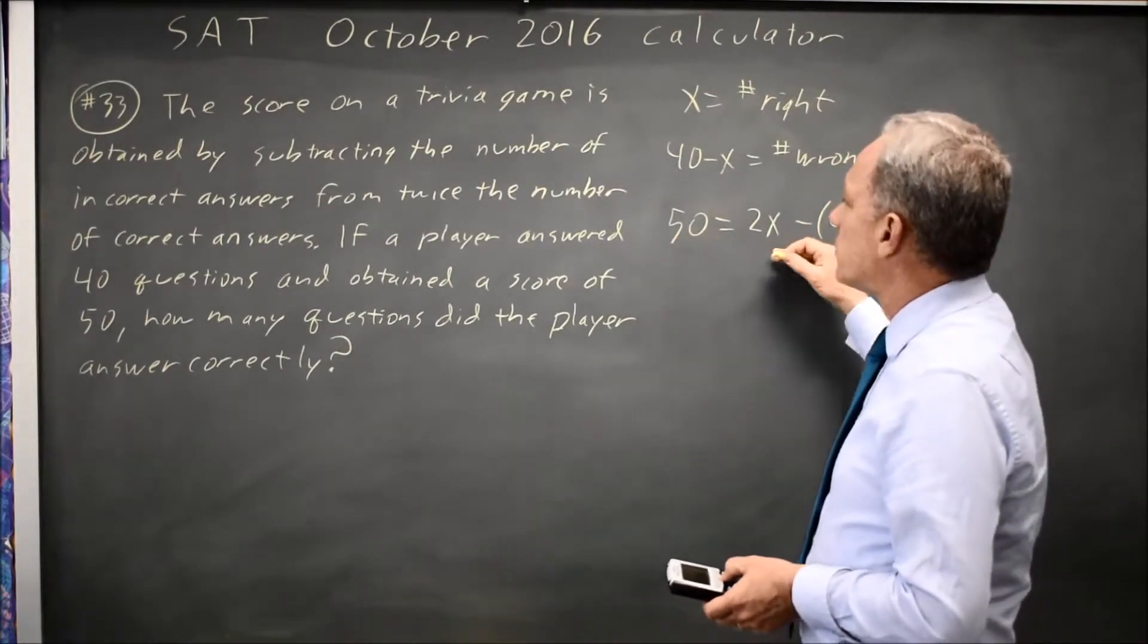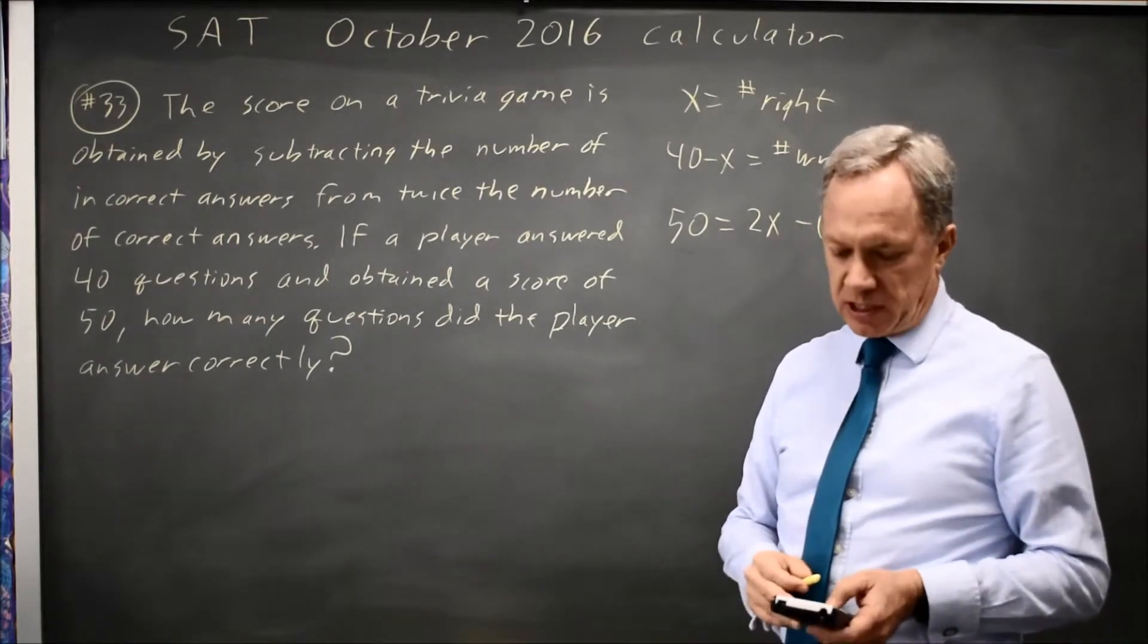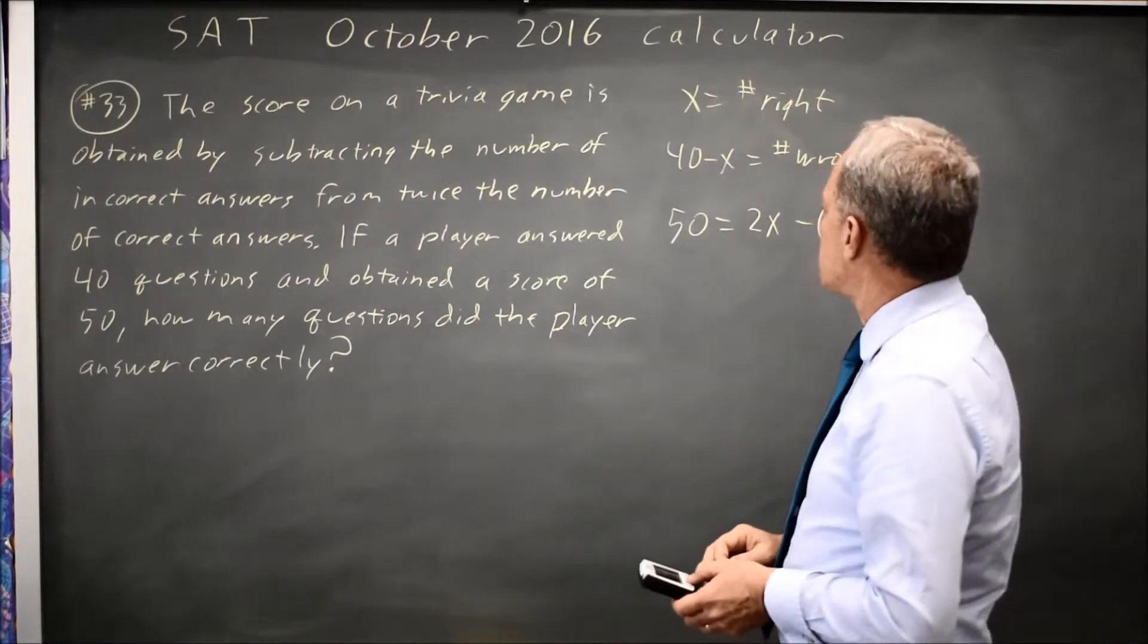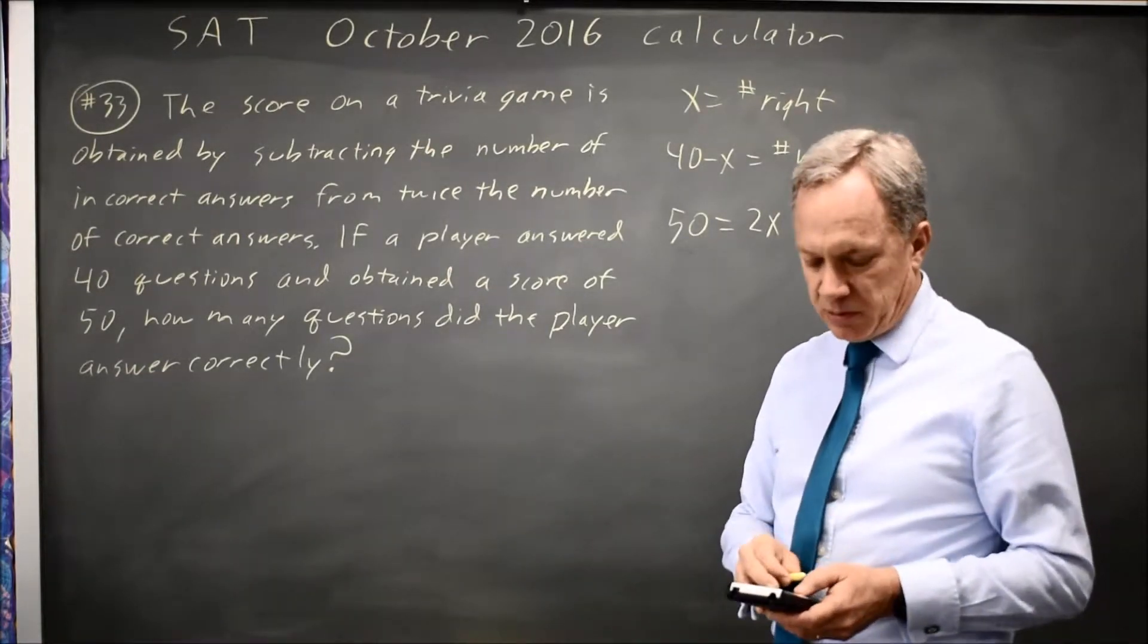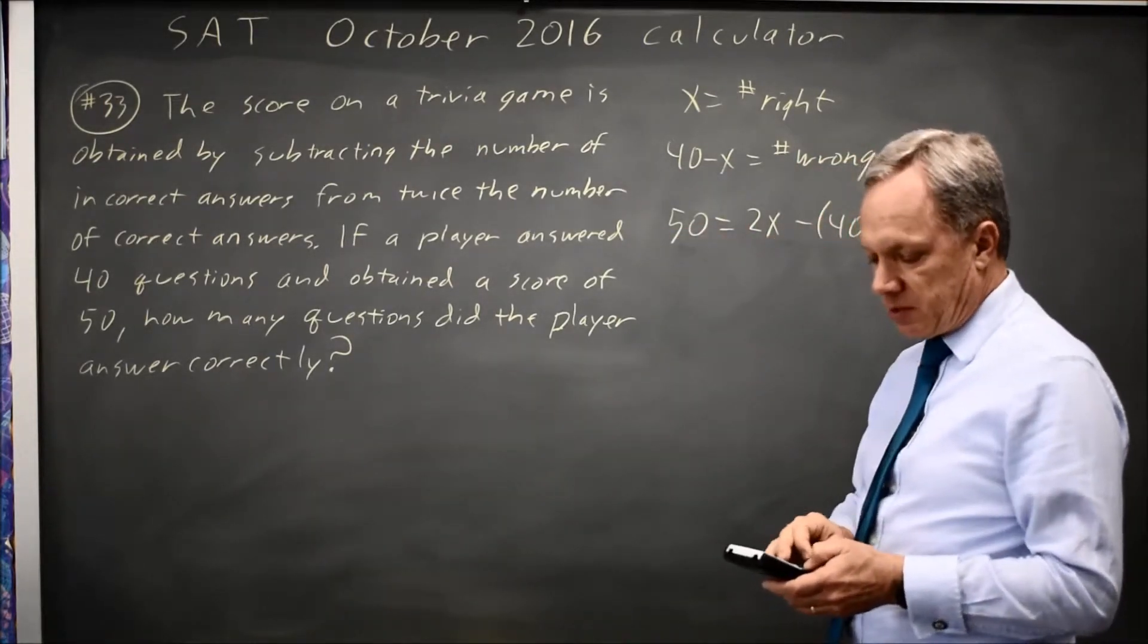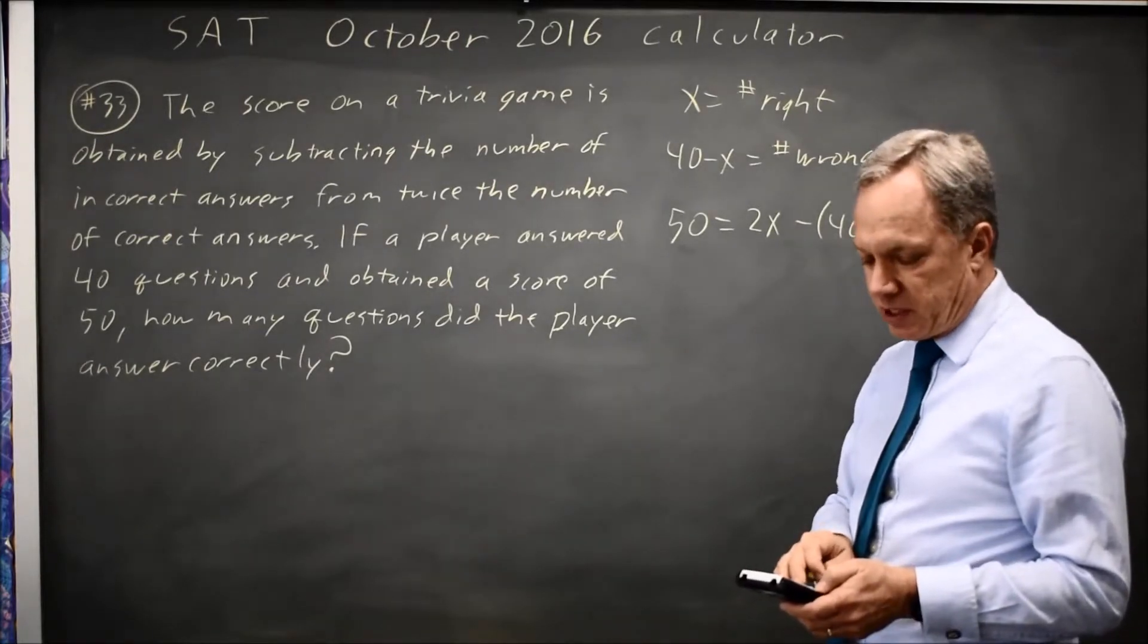I'll put the left side into y1, right side into y2. I'll make sure my x window includes any plausible answers. So x max 50, and let's say y max 80, so I can see them. And then this in y1, this in y2, graph them, and find the intersection, which is 2nd and then the trace button for Calculate.